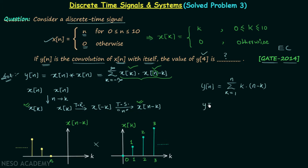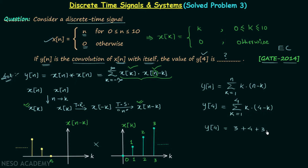Replacing n by 4 gives us the summation from k equal to 1 to 4 of k multiplied by 4 minus k. For k equal to 1: 1 times 3 equals 3. For k equal to 2: 2 times 2 equals 4. For k equal to 3: 3 times 1 equals 3. For k equal to 4: 4 times 0 equals 0. Adding these gives y4 equal to 10.